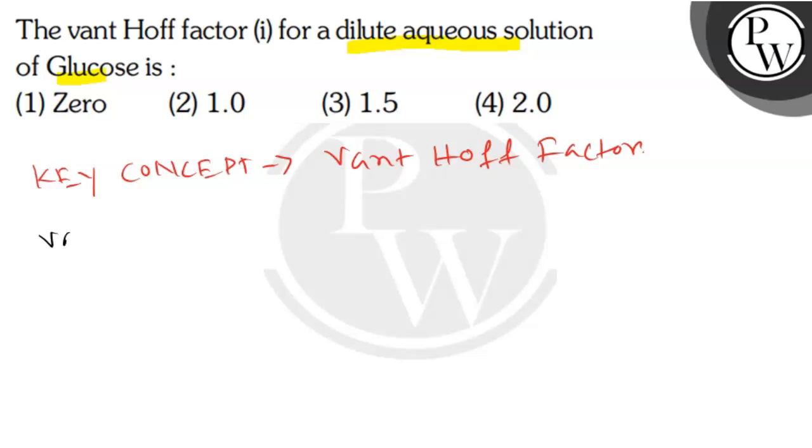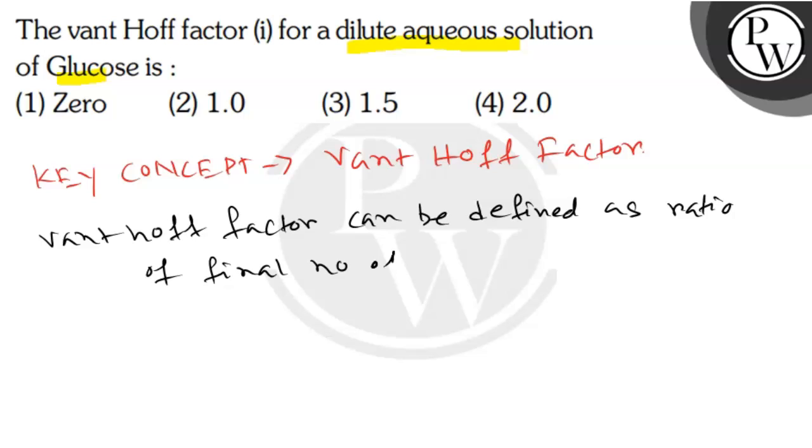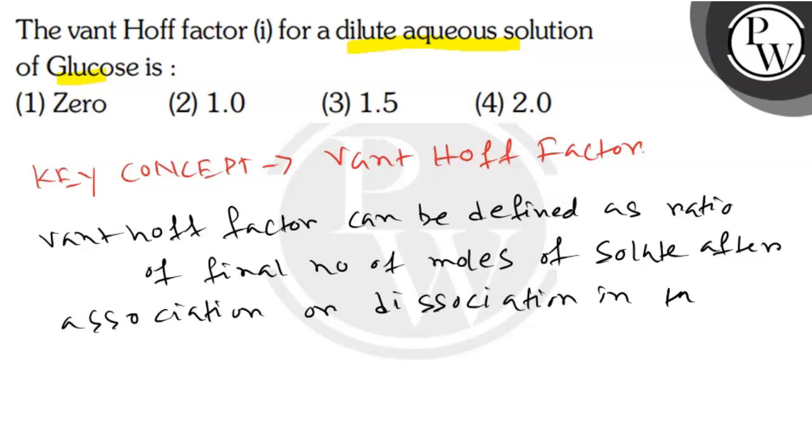Van't Hoff factor can be defined as the ratio of final number of moles of solute after association or dissociation in the solution to the initial number of moles before association.